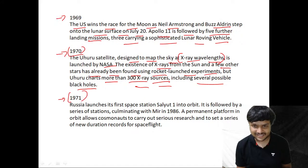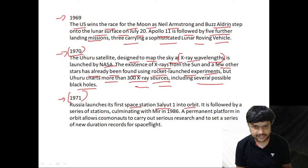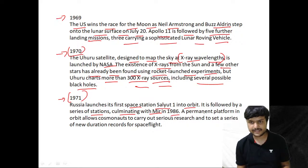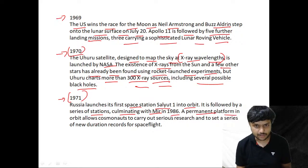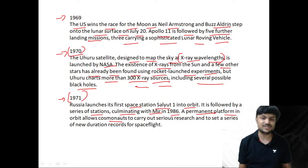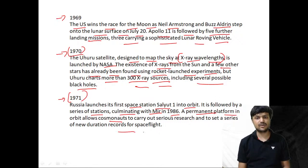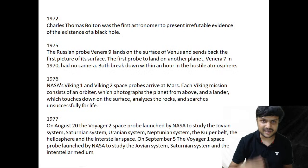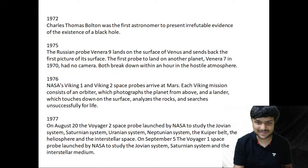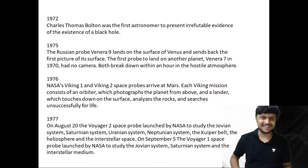In 1971, Russia launches the first space station, Salyut 1, into orbit. It was followed by a series of stations culminating with Mir in 1986. This permanent platform in orbit allowed cosmonauts to carry out serious research and set new duration records for spaceflight. We are moving towards the International Space Station era.